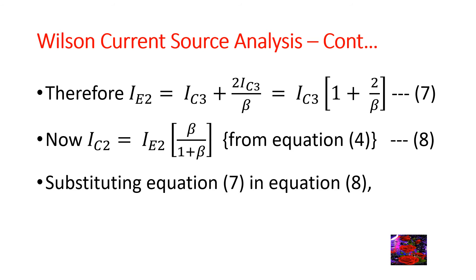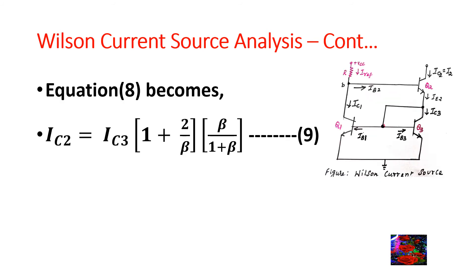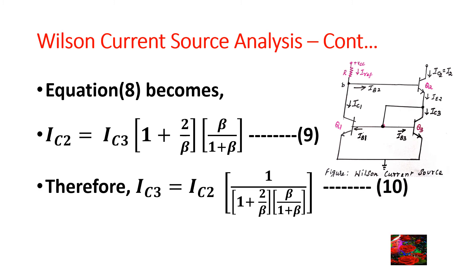Substituting equation 7 into equation 8: equation 8 becomes I_C2 = I_C3 · (1 + 2/β) · β/(1+β). Consider this as equation 9. Therefore, I_C3 = I_C2 · [1 / ((1 + 2/β) · β/(1+β))]. Consider this as equation 10.